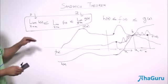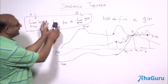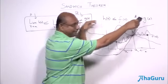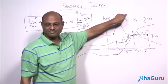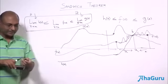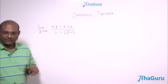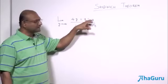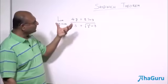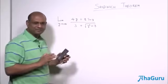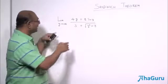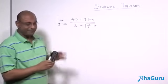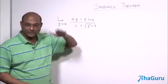Let us do a couple of examples to see how this is useful. The basic principle is: we don't know how to find the limit of f(x) directly, but we can write f(x) between two other functions whose limits we can find, and hopefully those two limits are equal. For the example, we want to find the limit as y goes to infinity of (4y + 8 sin y) / (3 + √(y² + 8)). Now, sin y keeps oscillating between +1 and −1, and we cannot say sin y ≈ y here since y is going to infinity.